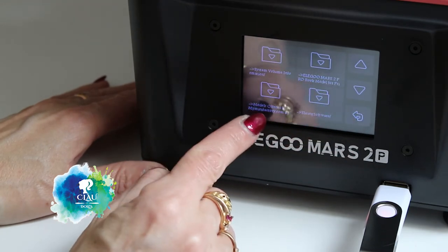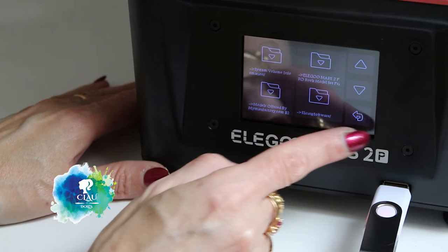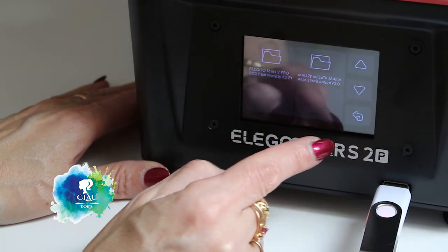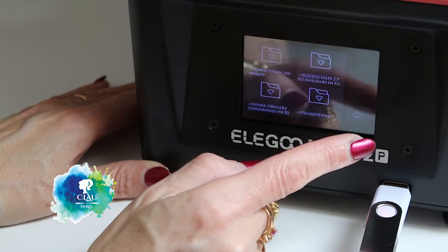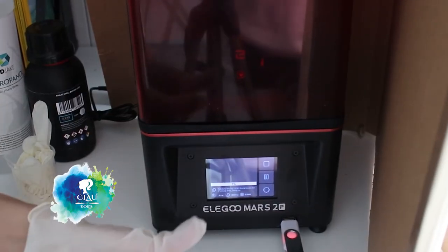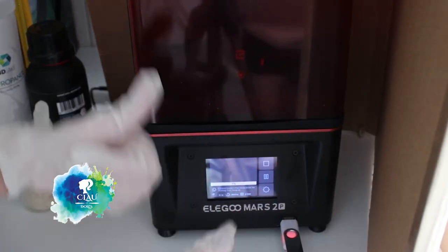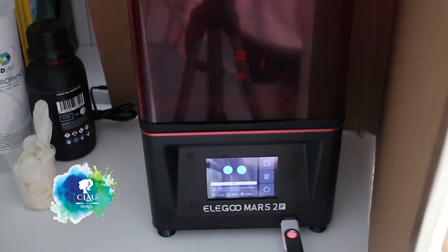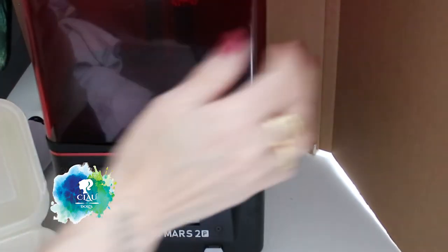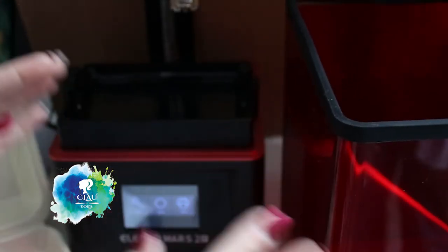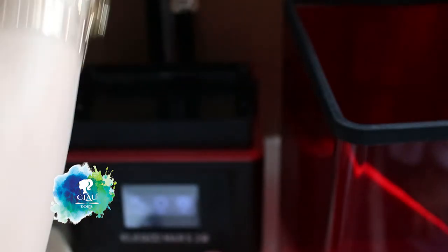She also comes with a USB stick with the software that you're gonna use. Just install it on your computer or laptop. I will put the link in the description box below to the site where you can get a lot of 3D printer files. Insert the USB stick, look for it, and you'll see the file you want to print. She already comes with a print file.